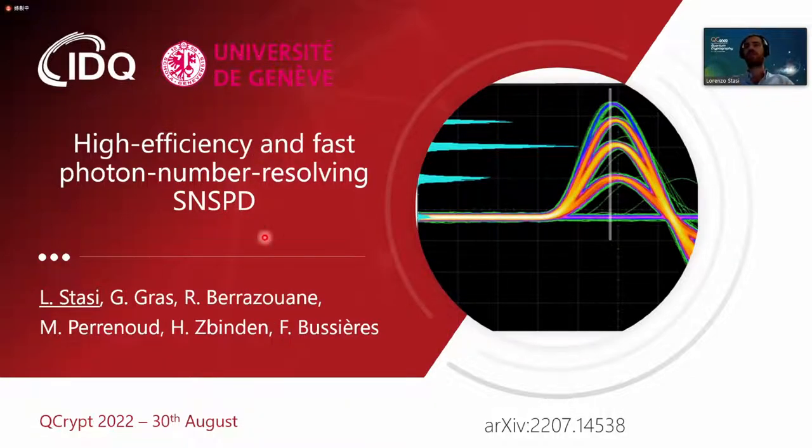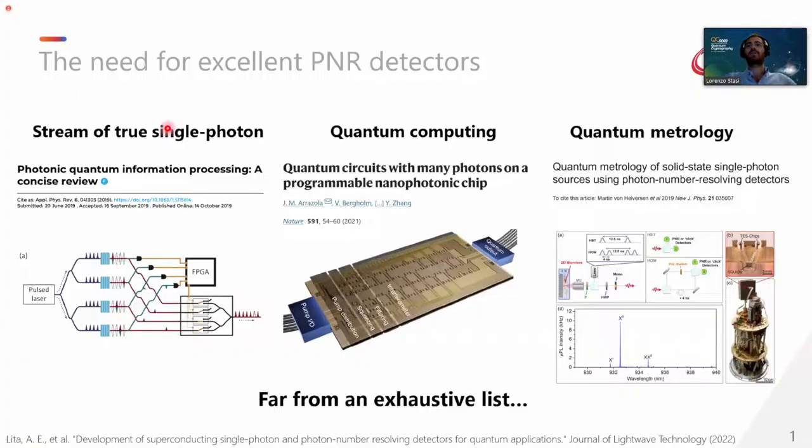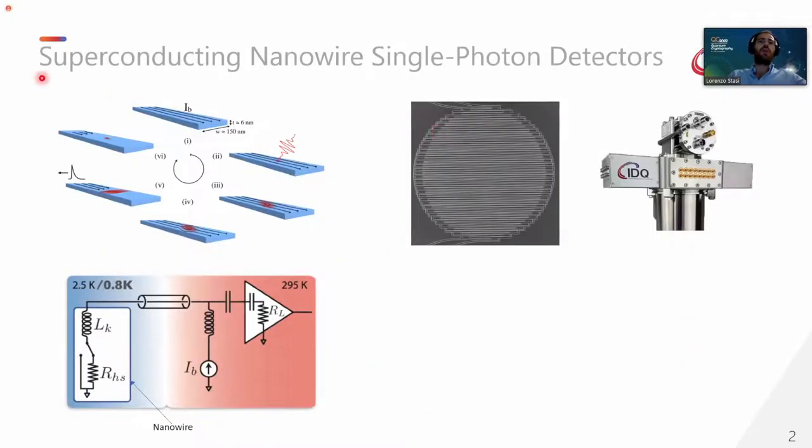Good morning, everyone in Taipei. Thanks a lot for accepting me. It's an honor to be at QCRIP 2022. So, I'm Lorenzo Stasi, and I will present you a high efficiency and fast photon number resolving SNSPD. The need for excellent PNR detectors has been in continuous growth in the last decade in separate fields of quantum optics. So, for example, if you want to generate a stream of true single photons, we can rely on an array of SPDC sources pumped in a strong regime. And PNR detectors can be used in order to filter out any kind of multiple photons that are going to be generated. Then PNR detectors are not big in linear optical quantum computing in order to assess the final photon numbers at the end of the quantum operation computation. And also in quantum metrology, PNR detectors can be used in order to assess the purity of single photon sources.